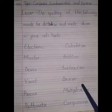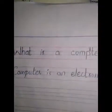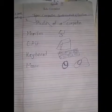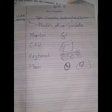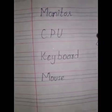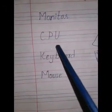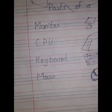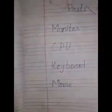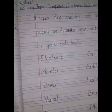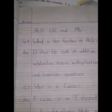Dictation words: what is a computer and parts of a computer — monitor, CPU, keyboard, mouse. Dear students, please learn all your homework and write in your notebook. Thank you.